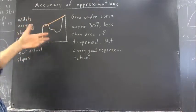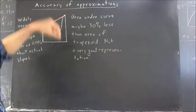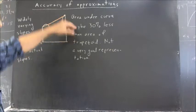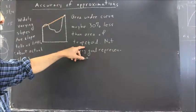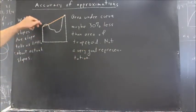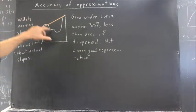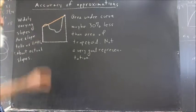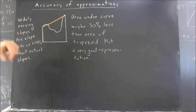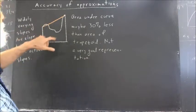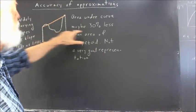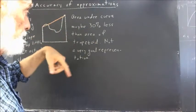That might or might not matter, depending on what it is we're looking at, but often it will matter quite a bit. Also, the area under the curve is maybe 30% less than the area of the trapezoid. We've got a little bit of curve above the trapezoid, but a big chunk below the trapezoid, and that chunk might be as much as, well, big enough that the area under the curve is maybe 30% less than that of the trapezoid.